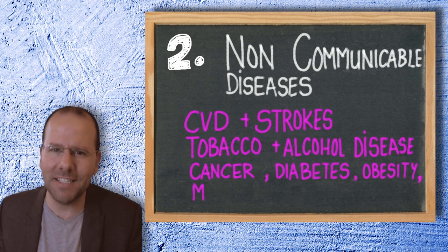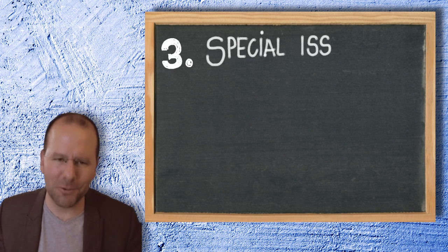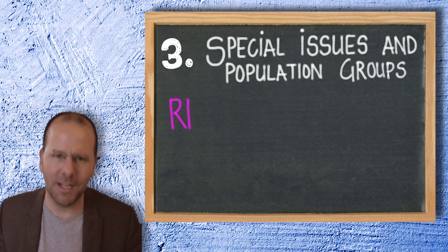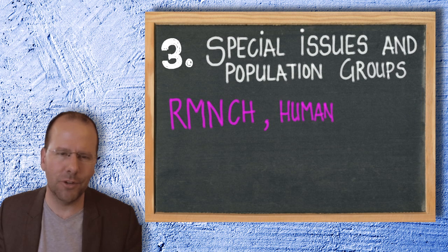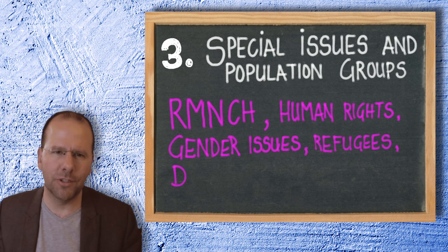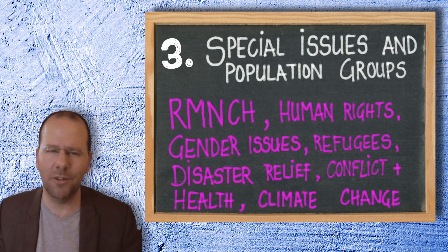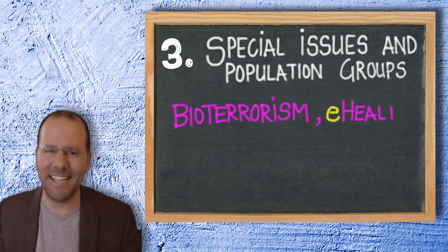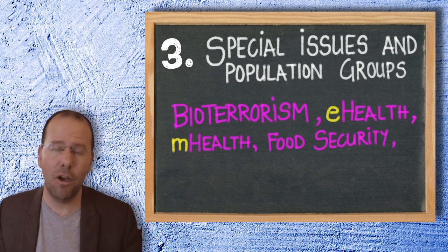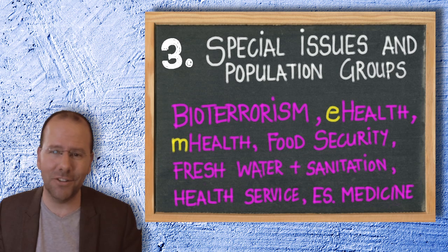And then, of course, we've got a whole lot of special issues and special population groups like reproductive maternal and newborn and child health. We've got human rights, gender issues, refugees and displaced populations, disaster relief and emergency aid, conflict and health, climate change and health, bioterrorism. We've got e-health, m-health, food security, fresh water and sanitation issues. We've got health services, essential medicines and diagnostics, and of course the social determinants of health.